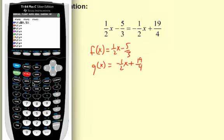And if you wanted to put 1 half x you could definitely do that. Minus 5 thirds, so 5 divided by 3.